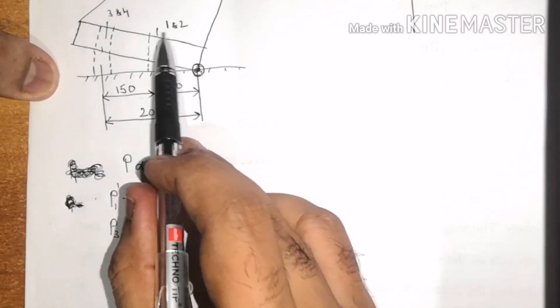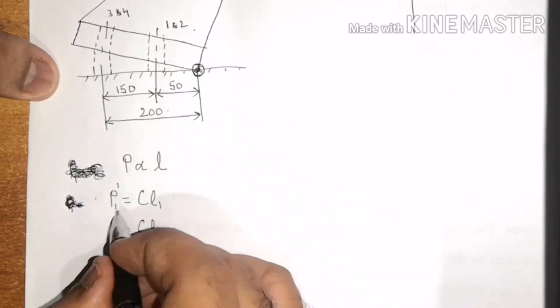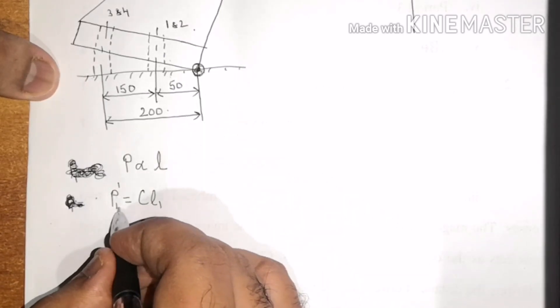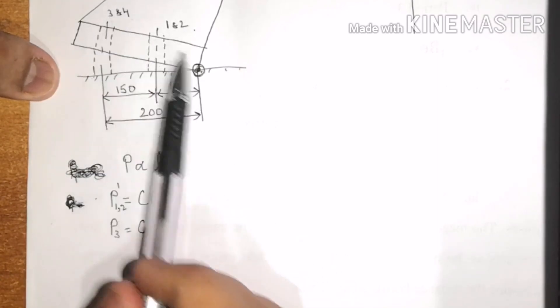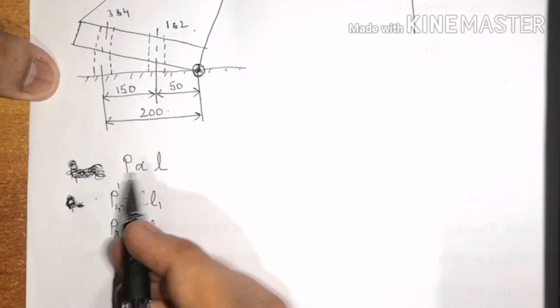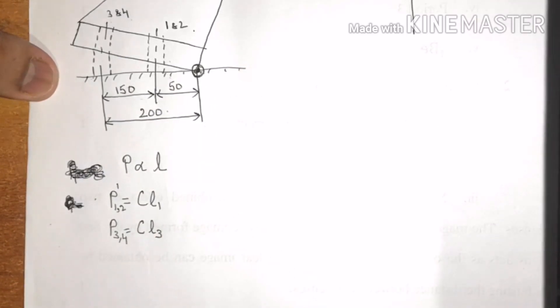Now, as bolts 1 and 2 are at the same distance from the fixed point, P1 and P2 will be the same. As bolts 3 and 4 are at the same distance, P3 and P4 = C × L3.